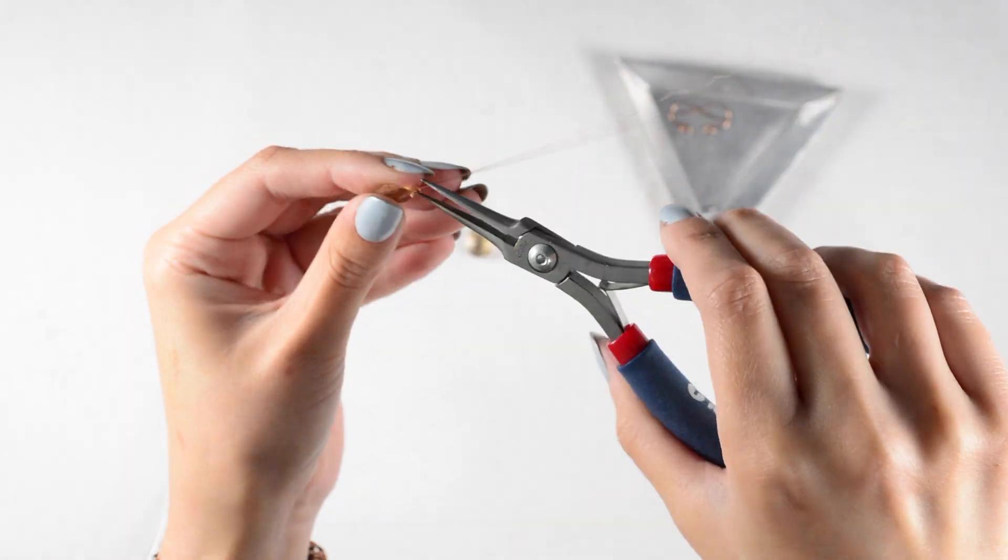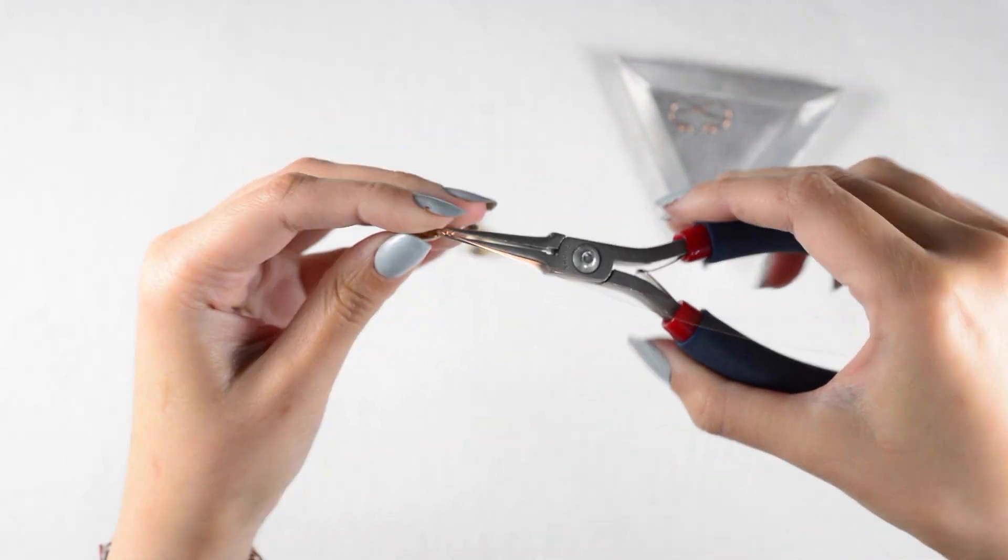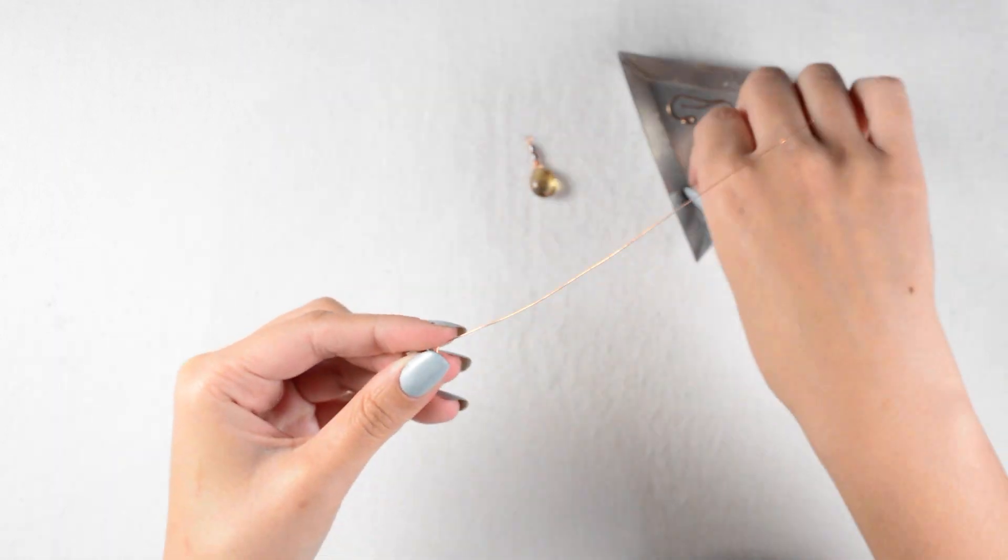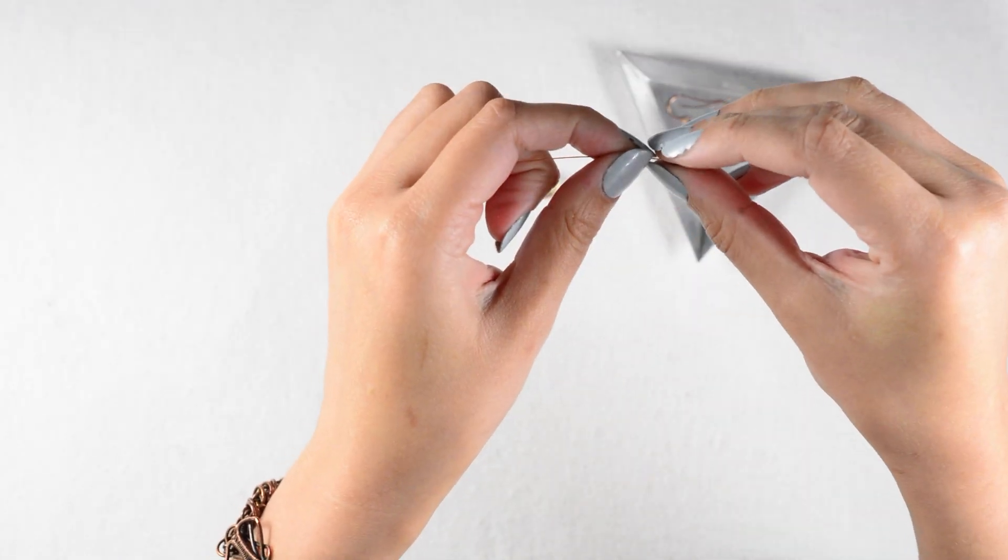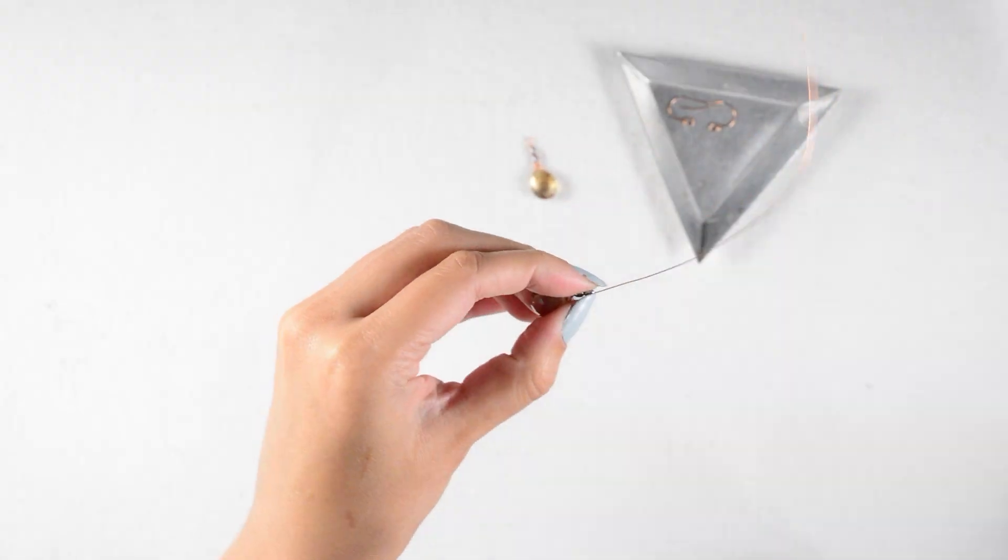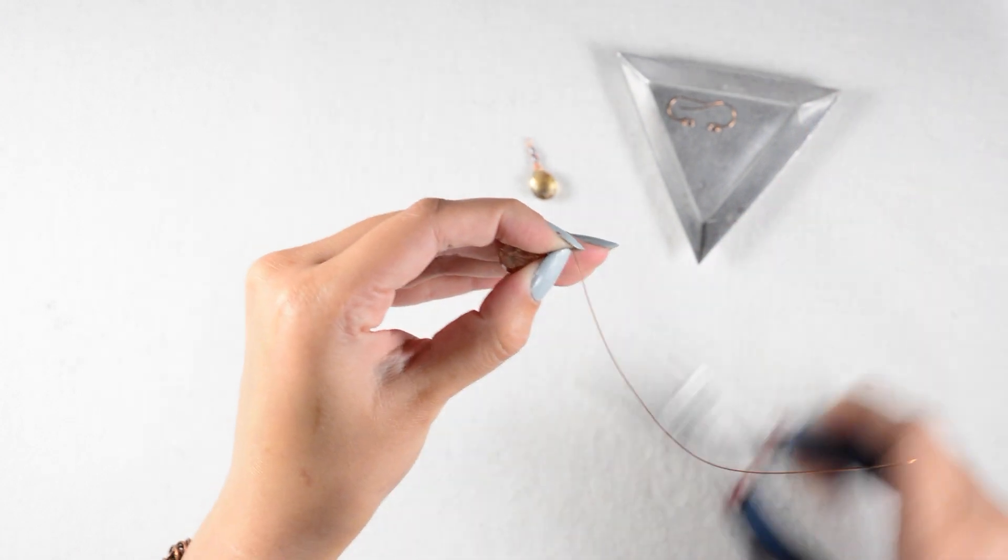So I will go ahead and wrap that bail and thread those pearls. And when I get to that top loop, I want to make sure my tail is going in the opposite orientation of the first loop I did.